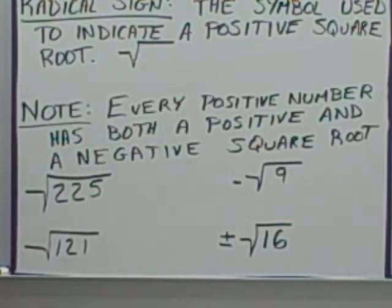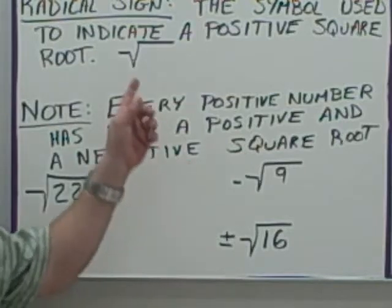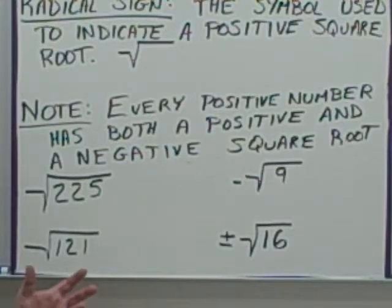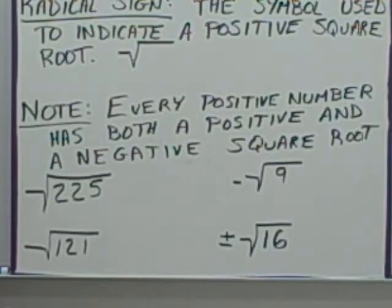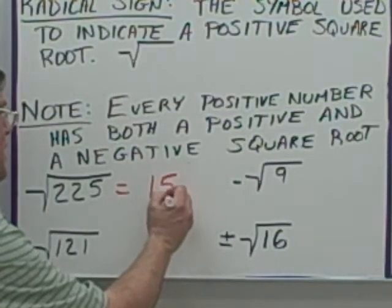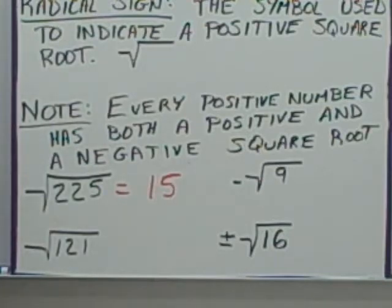Note: every positive number has both a positive and a negative square root. The square root symbol — this radical — represents just the positive square root. For example, here we have the square root of 225. You plug that into your calculator: type 225, hit the square root symbol, and it gives you 15. Similarly, hit 121 in your calculator, then hit the square root symbol, and you get 11. These are the positive square roots.